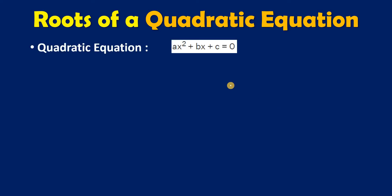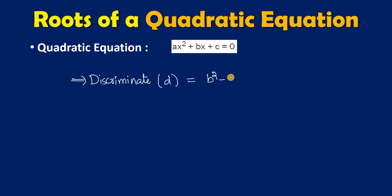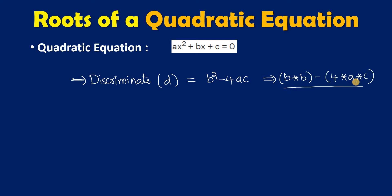A quadratic equation looks like this: ax² + bx + c = 0. In order to find the roots for this equation, first we have to find the discriminant. The discriminant is denoted by d = b² - 4ac. In Java language we are going to write it as b*b - 4*a*c.